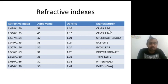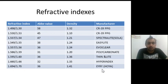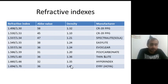Manufacturers include CR39 PPG, CR39 PPG and EasyLight, EvoClear, Polycarbonate, Thin and Alite, Hyperindex, and every Hoya — Hoya being a well-known brand.